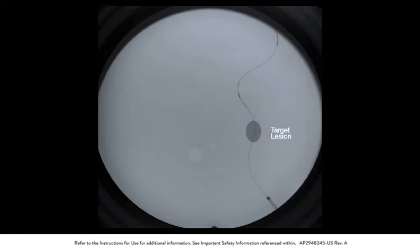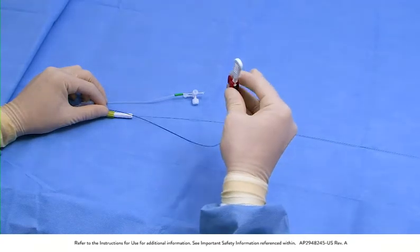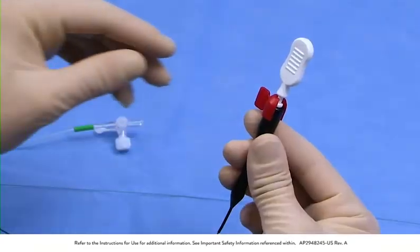Once the delivery catheter is positioned, the filtration element may be deployed. Remove the red locking clip from the black handle of the delivery catheter.